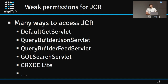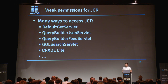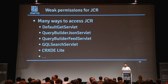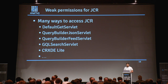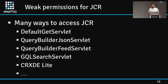Another big security problem is weak permissions in GCR. Weak permissions lead to disclosure of sensitive information like API tokens, passwords, cryptographic keys, and personally identifiable information. In the case of write access somewhere in GCR, the attacker can exploit stored cross-site scripting, XML external entities, server-side request forgery, and code injection vulnerabilities. There are plenty of ways to access GCR for reading — if you block the Query Builder JSON servlet at the dispatcher level, attackers can try other means like the GQL search servlet or default GET servlet. That's why layered security is very important.